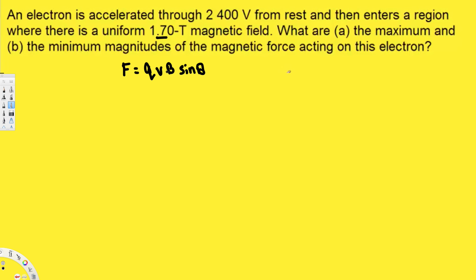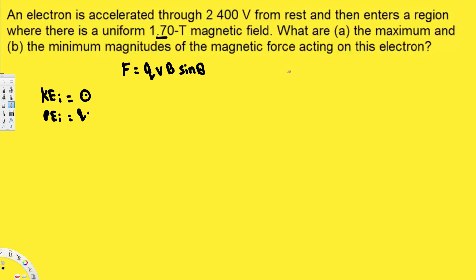To find the velocity, since it's not provided, we can use the conservation of energy equation. The electron starts from rest, so there is no kinetic energy in the initial state — kinetic energy is ½mv², which is zero at rest. There is only potential energy initially, and the electric potential energy equation is PE_initial = qV, where V is voltage.